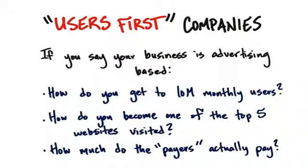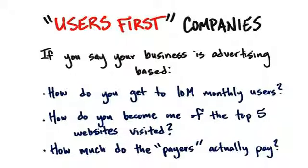If you wait two years to find this out, you might have gotten 10 million of the wrong users. So your job is not only to talk to the users in a multi-sided market — your job is to get out of the building and talk to the payers, because you have a hypothesis. An important one is how much will those payers pay for the users you think you're collecting?